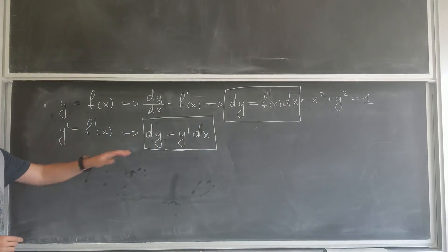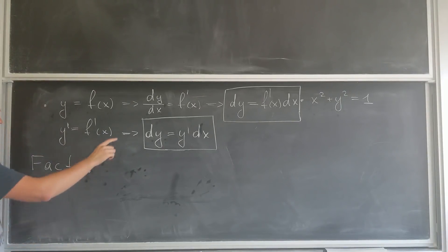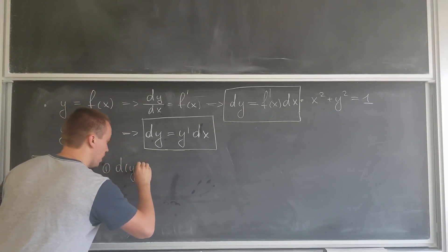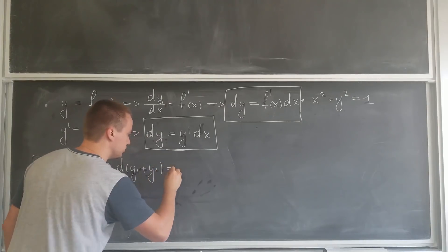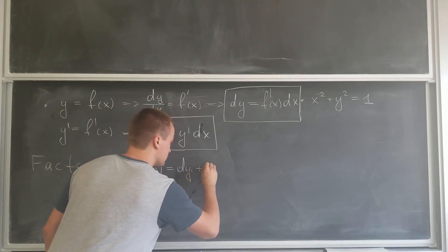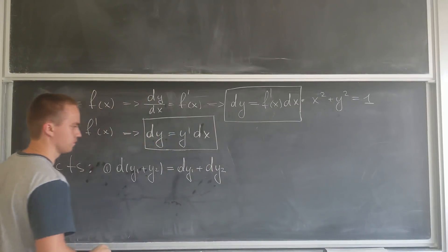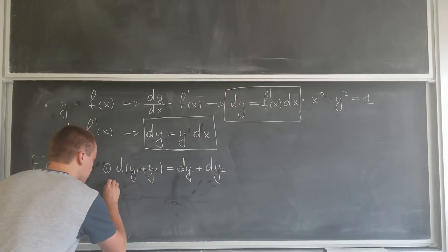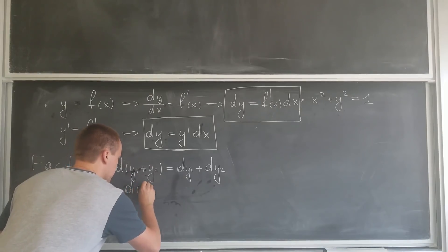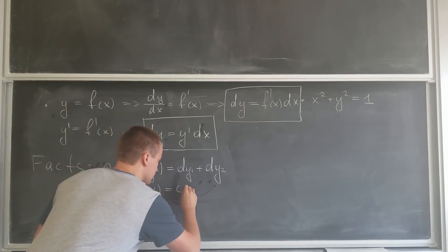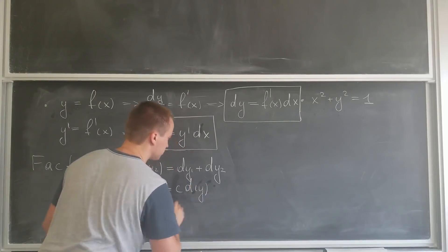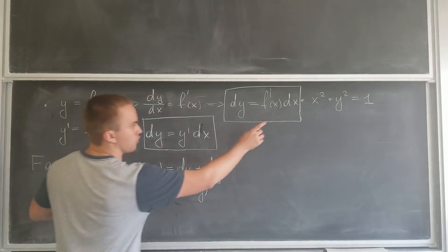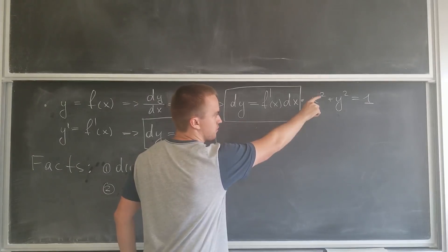Some small facts I want to show about this formula. The first fact is that d is linear: d of y1 plus y2 equals dy1 plus dy2 — the d of a sum of two functions equals the sum of their d's. The second fact is that d of a constant times y equals that constant times dy. I'm going to prove both of these facts at the end of the video, but I'll use them now to apply implicit differentiation to our example.